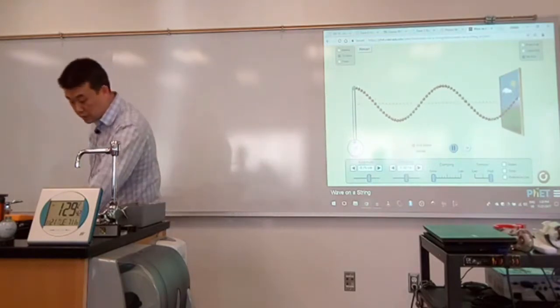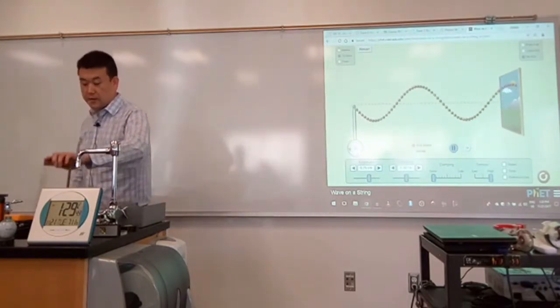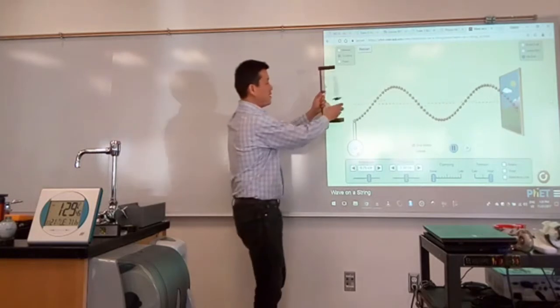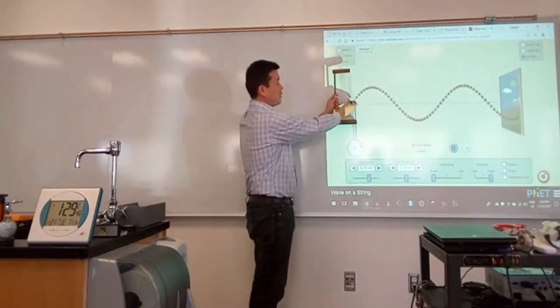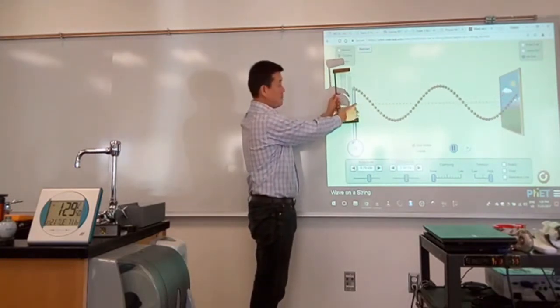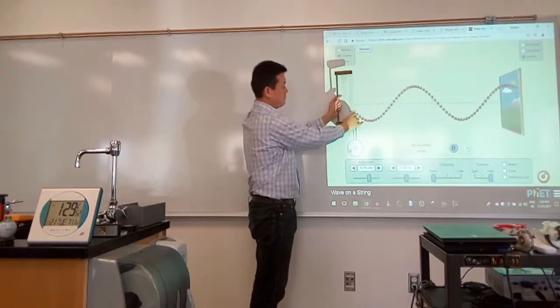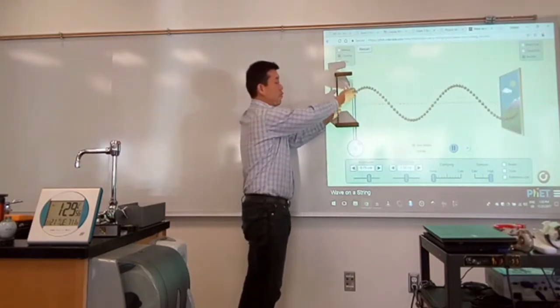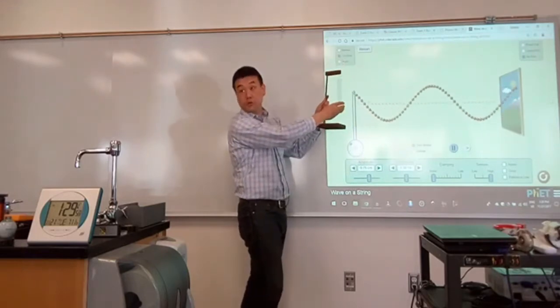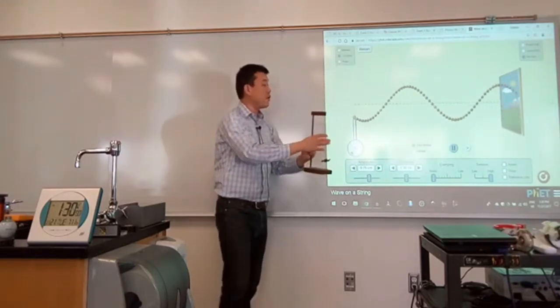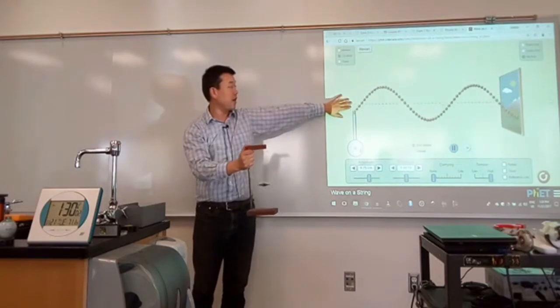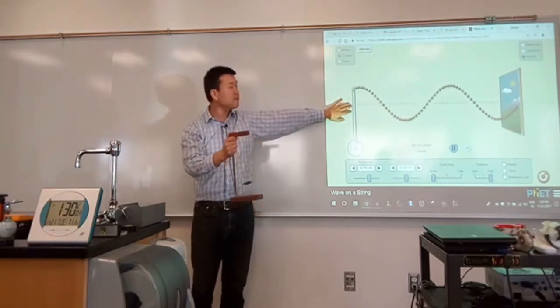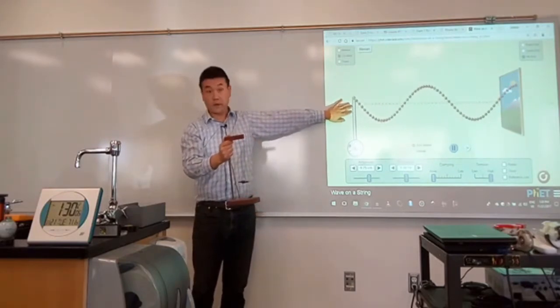Another thing you could also imagine happening physically is if you imagine that this end is attached to a kind of masonous spring, and imagine that this masonous spring is oscillating up and down at the natural oscillation frequency. That's how you would get something that looks like a periodic traveling wave.